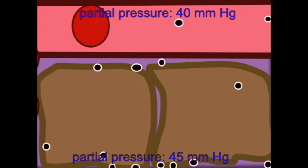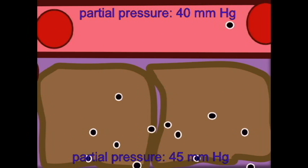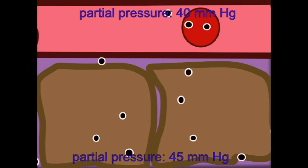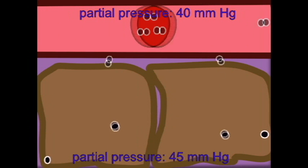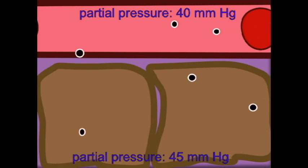If carbon dioxide has a partial pressure of say 45 in a tissue and 40 in blood, then carbon dioxide will leave the tissue and enter the blood.